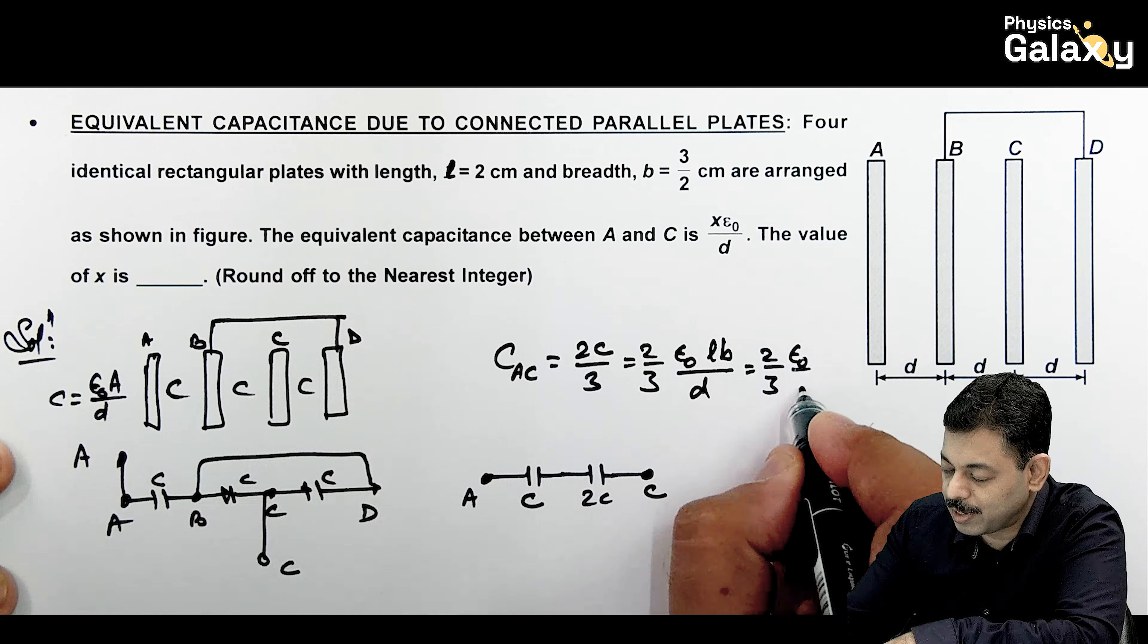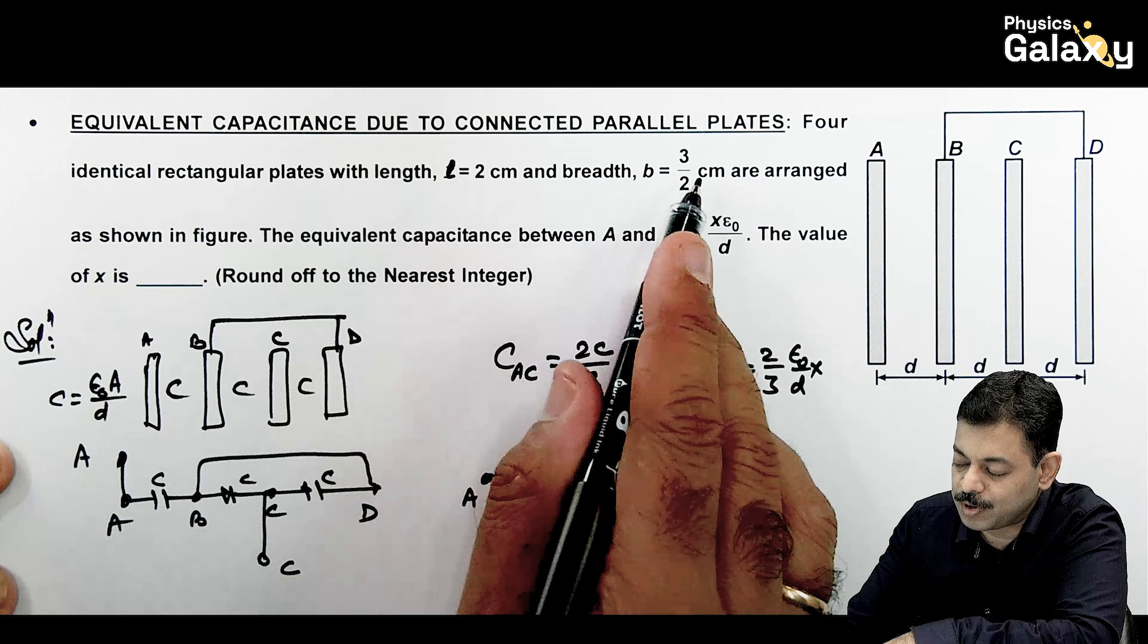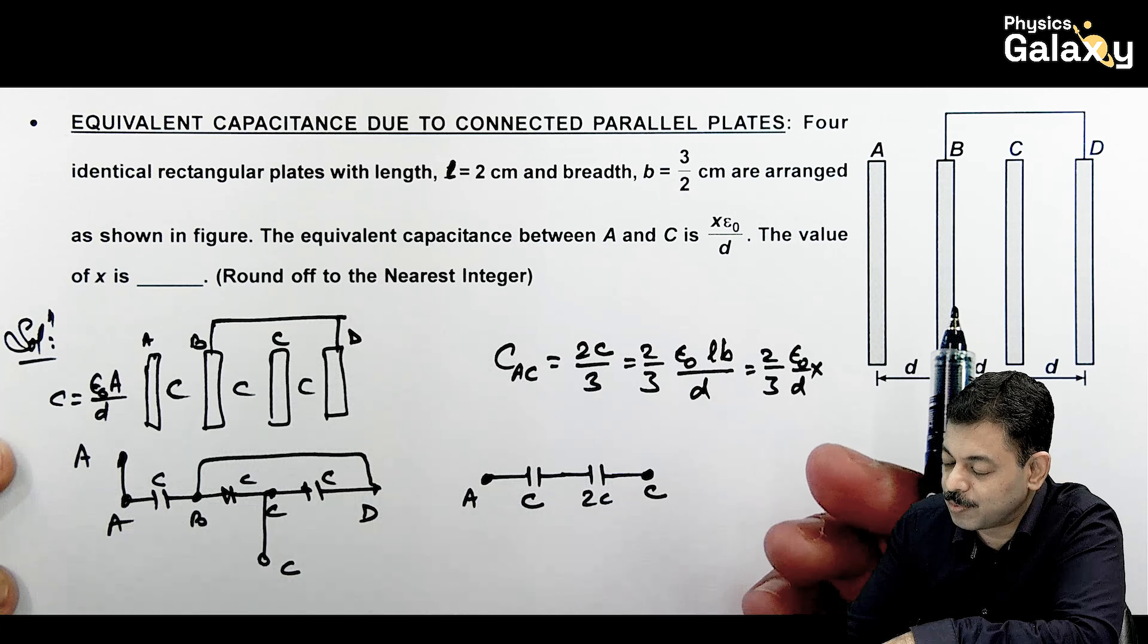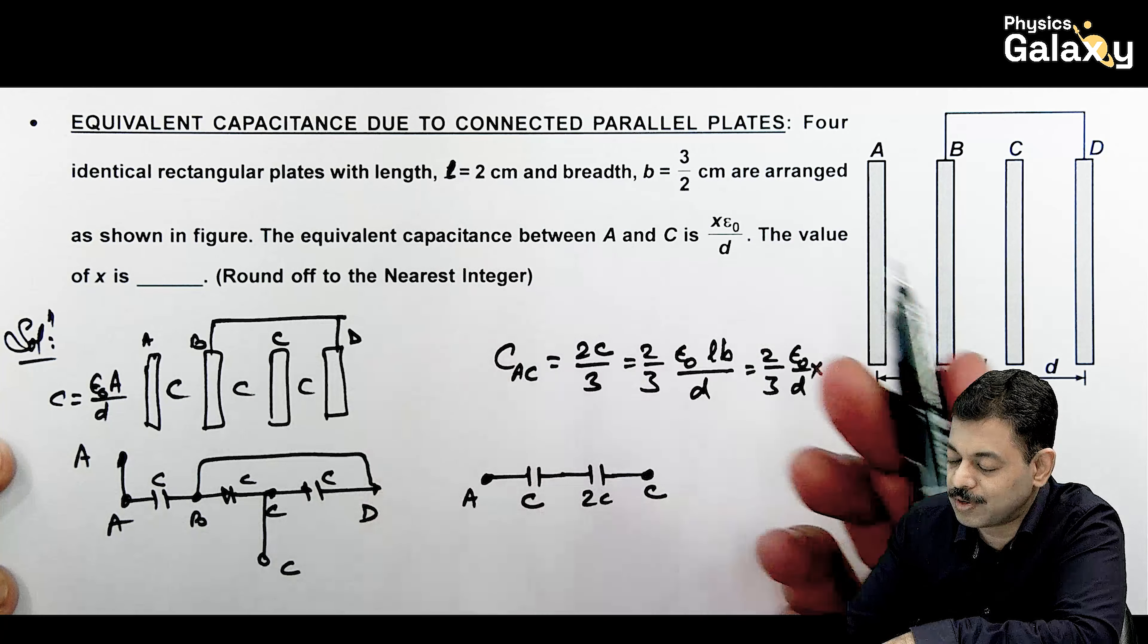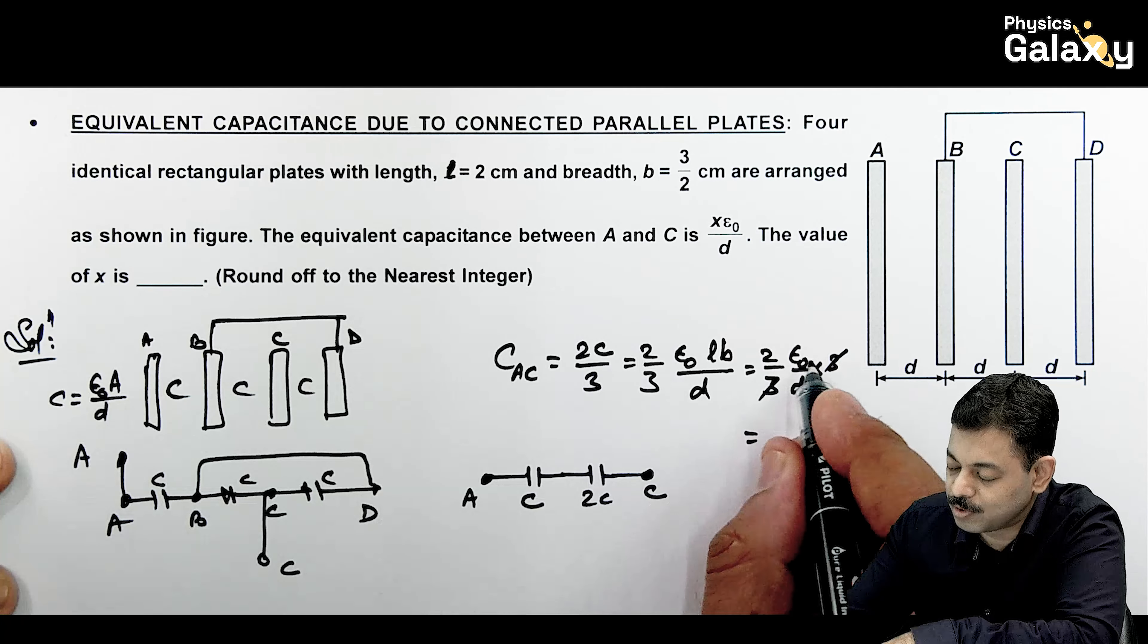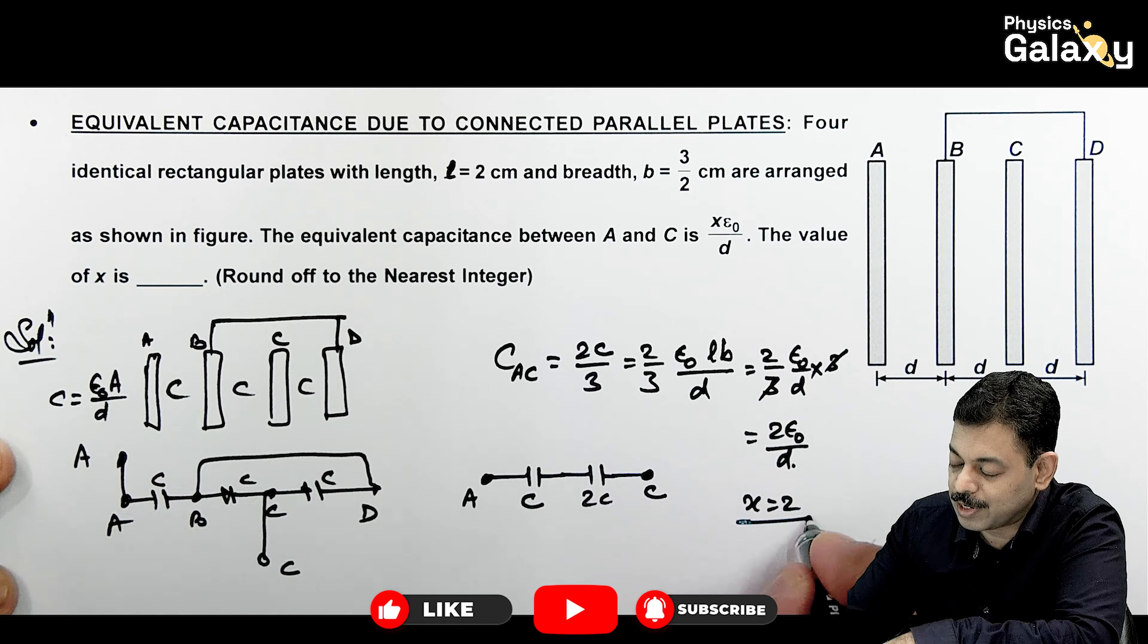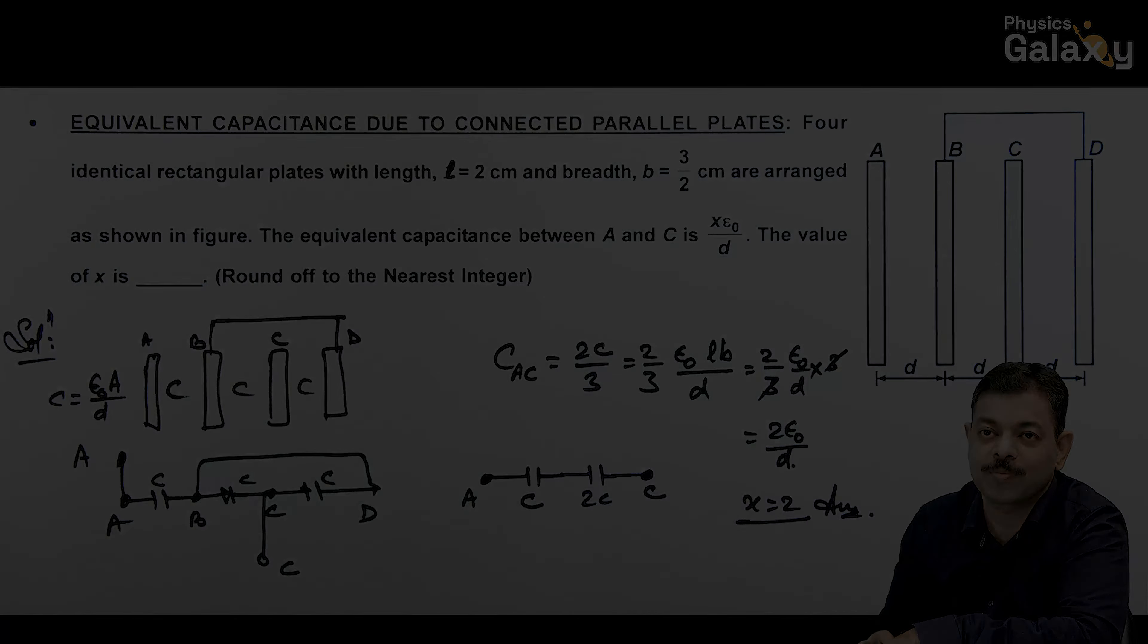In centimeter we are using the units. This comes out to be 2 epsilon naught by D. So here x ka value will take as 2. That is the answer to this problem.